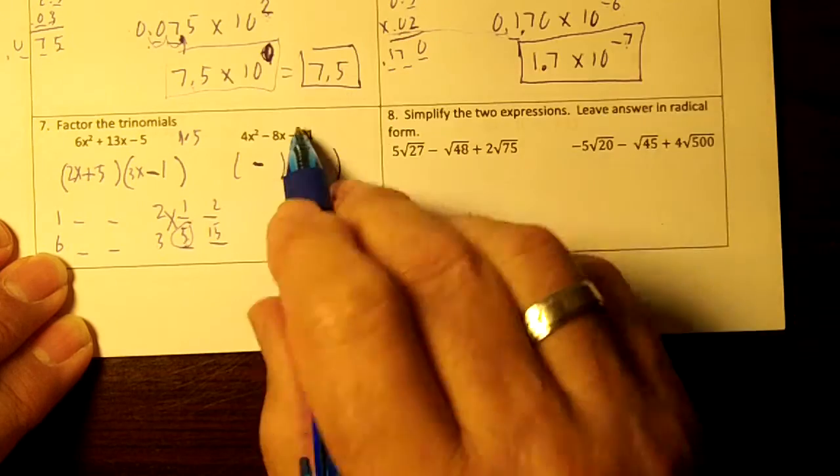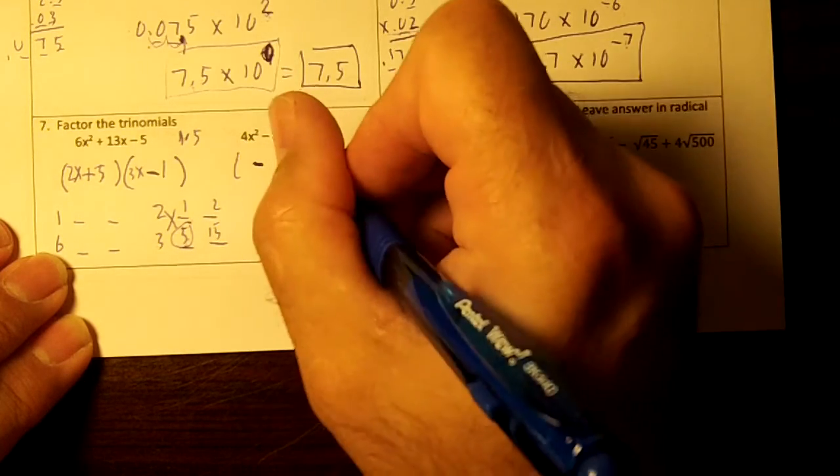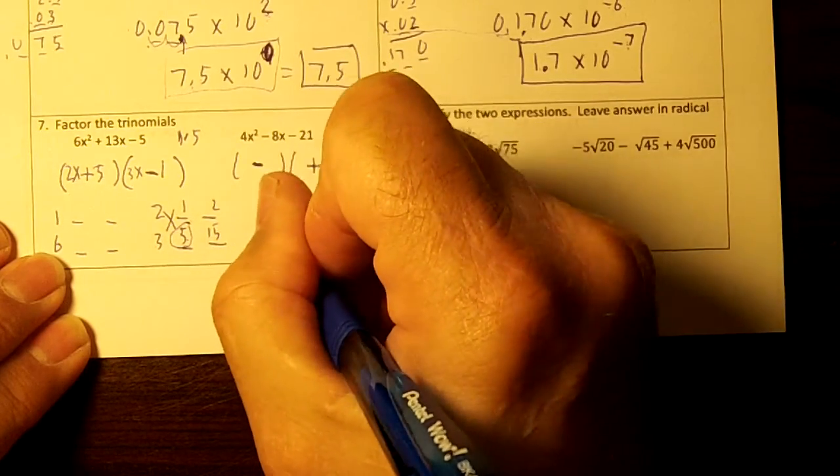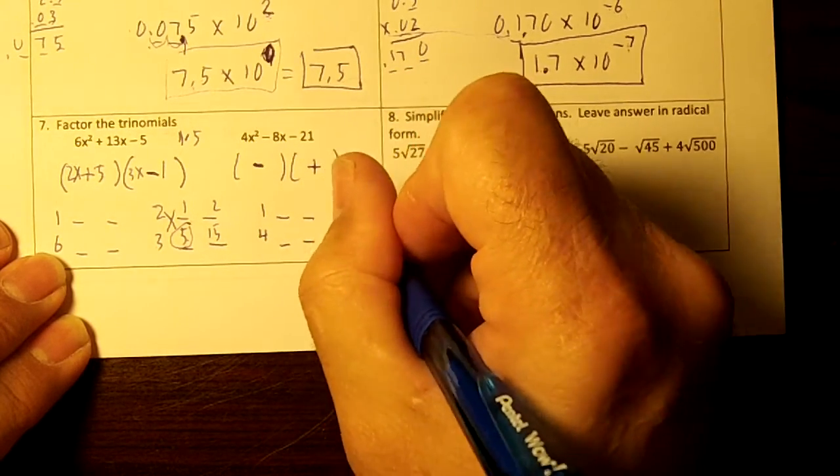The minus drops. This minus means we're going to subtract so the signs have to be different. The factors of 4 are 1 and 4. Draw your two blanks. And 2 and 2. Draw your two blanks.